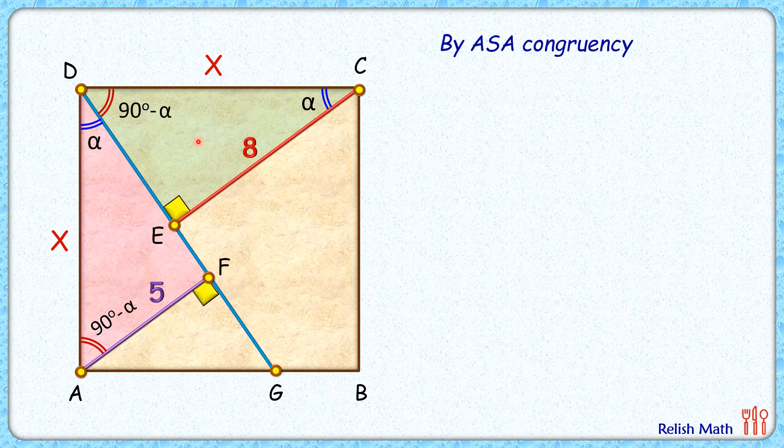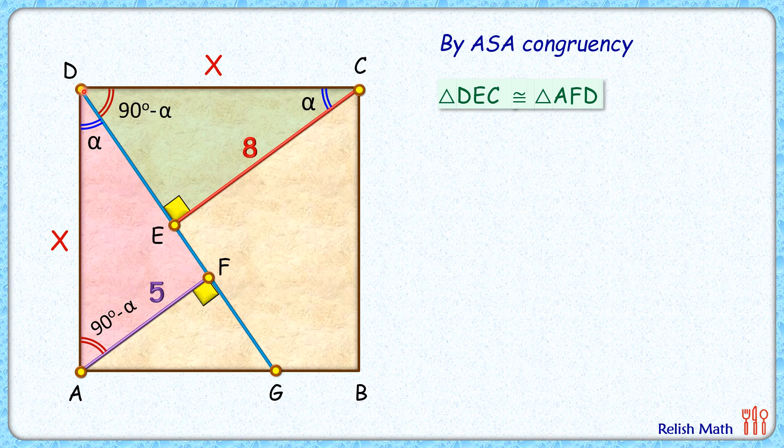Thus by angle-side-angle congruency, we can say that this green triangle, that's triangle DEC, is congruent to triangle AFD. As the triangles are congruent, thus corresponding sides will be equal.